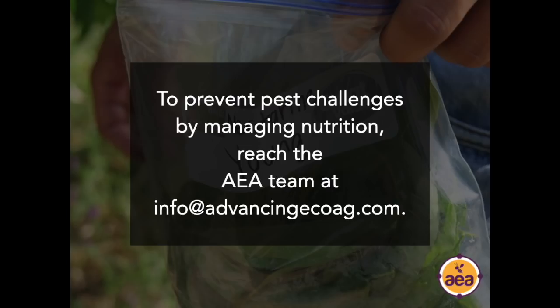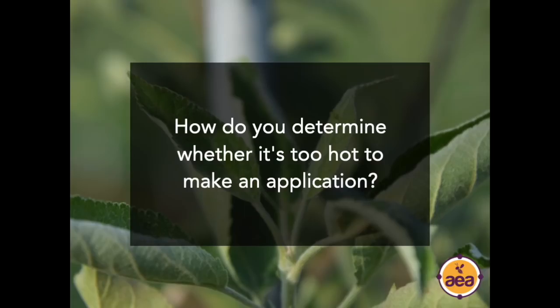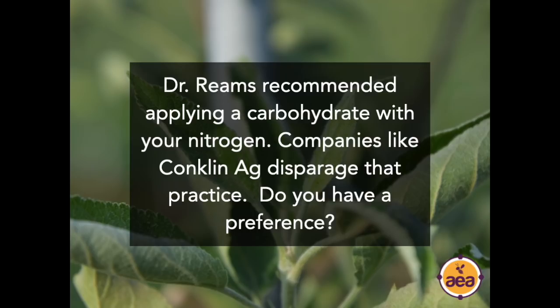A question from Dan Pavich: how do you determine whether it's too hot to make a foliar application? The ideal is to put on foliar applications when leaf temperatures are below the thresholds mentioned — 78°F for C3 and 86°F for C4 photosynthetic pathway plants respectively. The easiest way to measure that is to use an infrared thermometer — a point-and-shoot thermometer — to easily measure leaf temperature of the canopy.